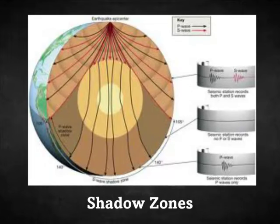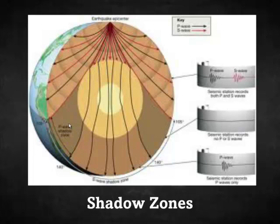A shadow zone is an area where no earthquake waves are received. Black arrows represent P waves and red arrows represent S waves radiating outward from the epicenter and focus. There is a region — the shadow zone — where waves do not reach. We know that S waves do not travel through liquids and only travel through solids. Since S waves do not reach certain parts of the Earth, scientists inferred there must be liquid inside the Earth stopping them, which is how they concluded the outer core is liquid.